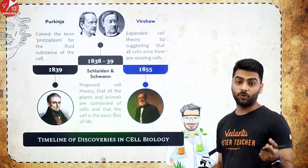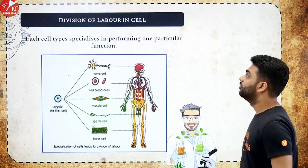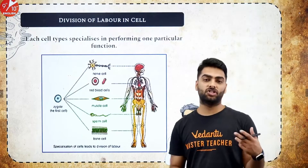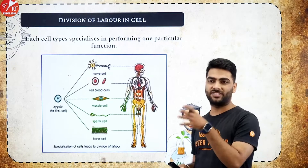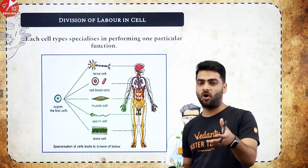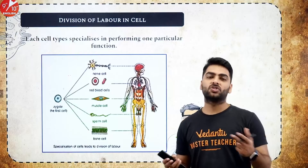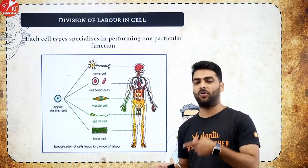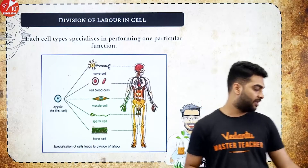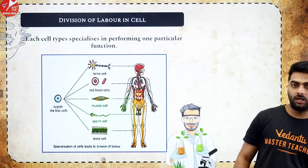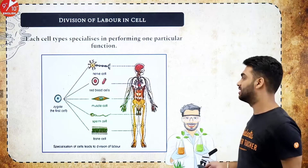Schleiden, Schwann, and Purkinje gave the term protoplasm, which means the living part of the cell. In a multicellular organism, we have division of labor: a group of cells makes tissues, tissues make organs, organs make organ systems, and all organ systems together make the organism. Because there are so many complex catabolic, anabolic, and metabolic processes happening in a multicellular organism, the labor is divided among many cells.